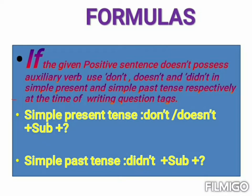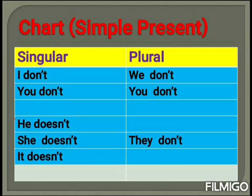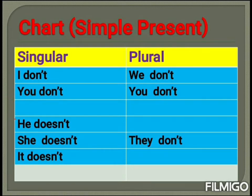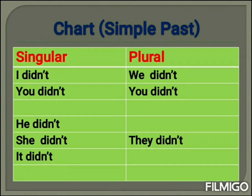Let's see a chart about simple present tense. This chart includes two columns — first one singular, second one plural. Singular: I don't. Plural: we don't, you don't. He/she/it: doesn't. Plural: they don't.